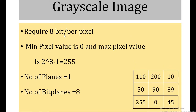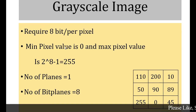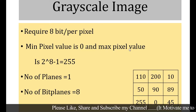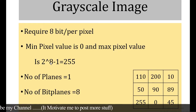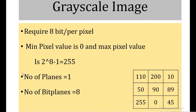The second type is the grayscale image. In a grayscale image, we require 8 bits per pixel to represent a single pixel. The minimum pixel value is 0, and the maximum pixel value is calculated as 2 raised to 8 minus 1, which equals 255. The total number of planes in a grayscale image is 1, and the total number of bit planes is 8. Pixel values range from 0 to 255.